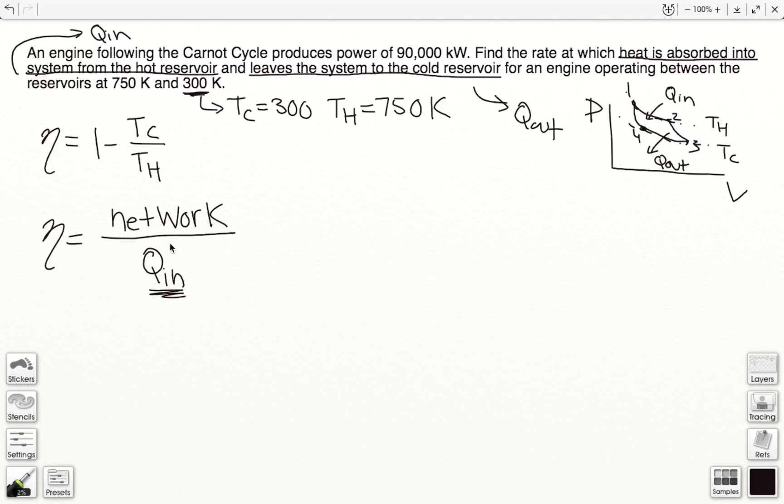So anyway, the net work done, that is the power, that value that's been given to us. So we know that this is at 90,000 kilowatts.